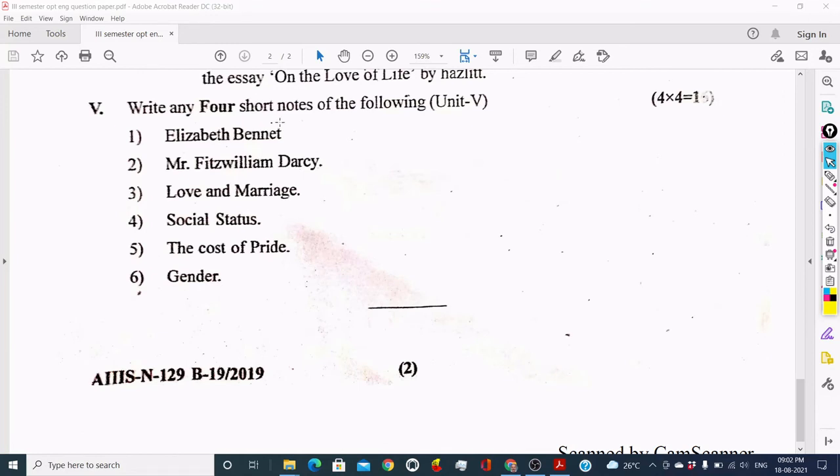The fifth main question is from the novel Jane Austen's Pride and Prejudice. There are six questions, each carrying four marks. Six characters and themes of the novel are given. You have to write any four questions out of the six questions given. Thank you.